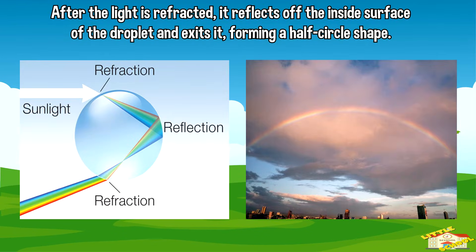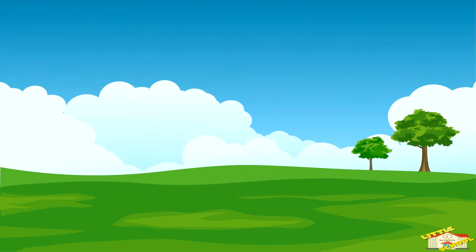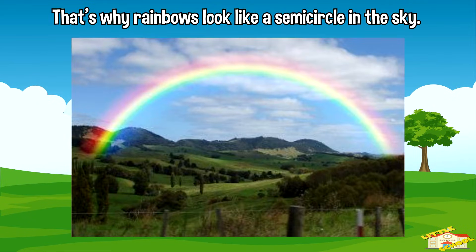After the light is refracted, it reflects off the inside surface of the droplet and exits it, forming a half-circle shape. That's why rainbows look like a semicircle in the sky.